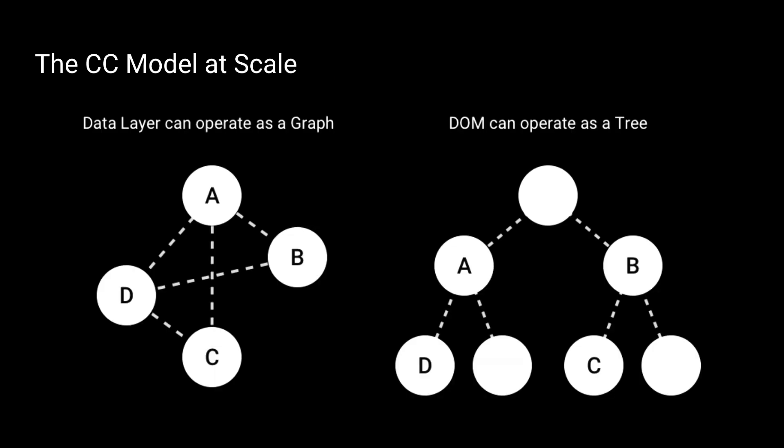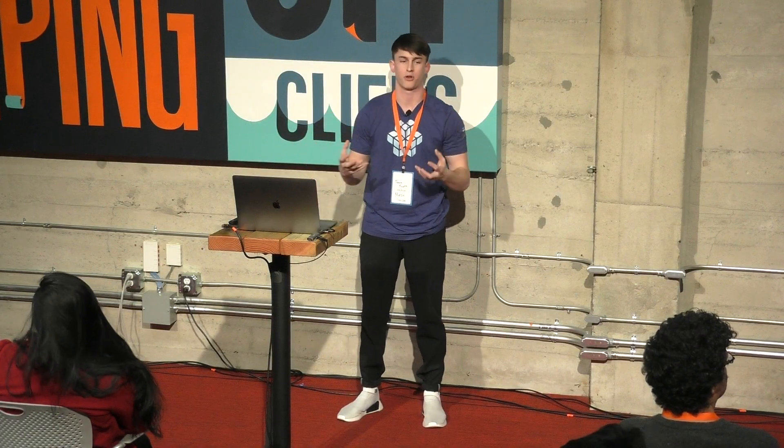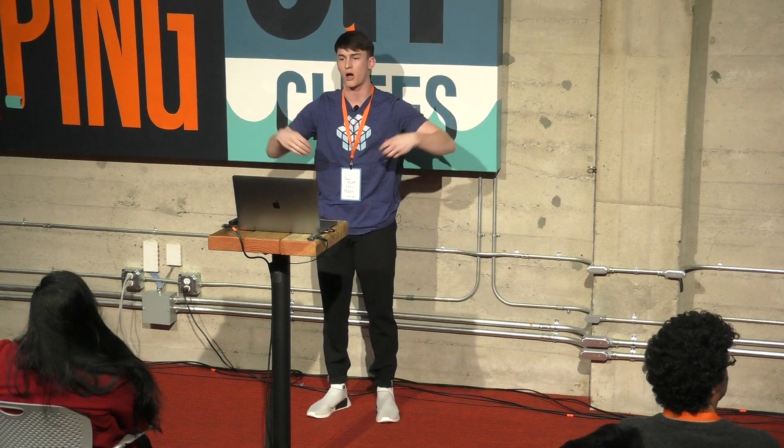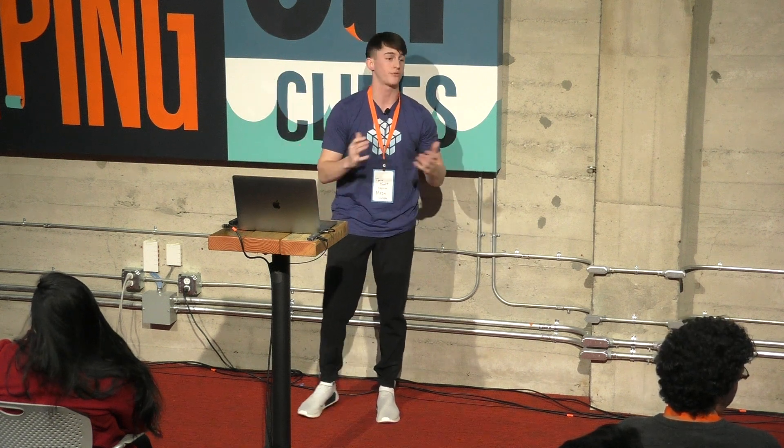A benefit of this is that your DOM is kind of like a tree. Redux propagates changes through a trickle-down system. However, in the DOM tree — say you have child D and child C — what if you want them to talk to each other? If you're trickling down an entire state and a change affects child C, you need to trickle it down so it hits C and D. With the component controller model, you can actually connect those controllers ahead of time and allow your data layer to operate as if it's a graph, rather than being dependent on trickle-down data flows of the DOM. This is a very powerful thing.